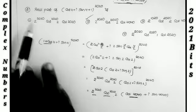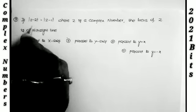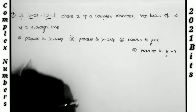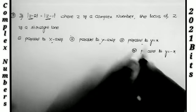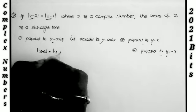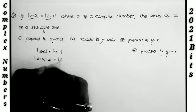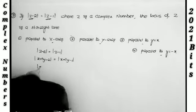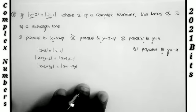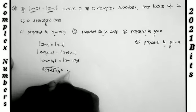Next: if |z − 2| = |z − 1| where z is a complex number, find the locus of z. Let z = x + iy. Then |x − 2 + iy| = |x − 1 + iy|, which gives √((x−2)² + y²) = √((x−1)² + y²). Squaring both sides: (x−2)² + y² = (x−1)² + y².